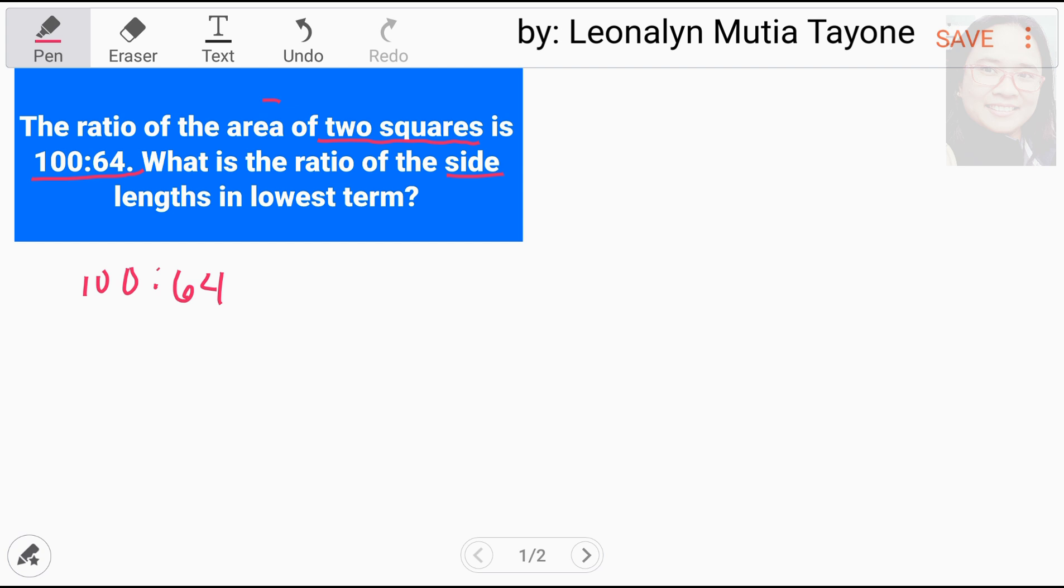Remember, area. So, mga area ito. Ano nga ba yung area? Square yan siya ha? Ang area is equals to side times side. Ito yung square. Kung kukunin mo yung area dyan, ay itong side na to, i-multiply mo lang yan, that is equals to area.